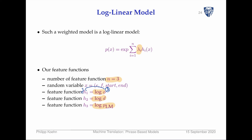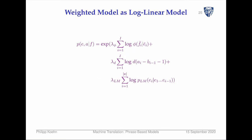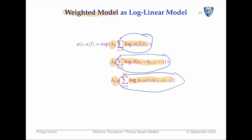So our weighted phrase-based model as a log-linear model looks like this, filling in all the gory details. These are all weights and these are all the actual formulations of each model component. It decomposes nicely: one expression for the phrase translation model, one for the distortion model, and one for the language model — they can all be computed independently of each other.